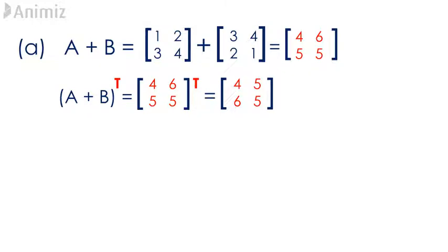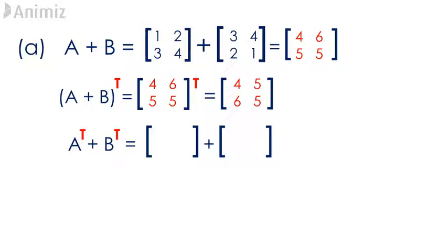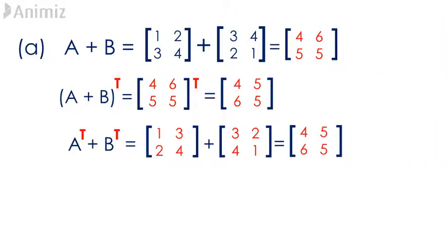Let's now proceed to look for A transpose plus B transpose. Interchanging the rows and columns of matrix A and B respectively will give us A transpose and B transpose. The outcome for A transpose is 1, 3, 2, 4, whereas the outcome for B transpose is 3, 2, 4, 1. Adding these two matrices together gives us the matrix 4, 5, 6, 5, which is equivalent to the outcome for A plus B transpose.